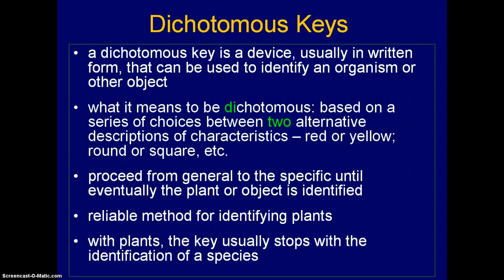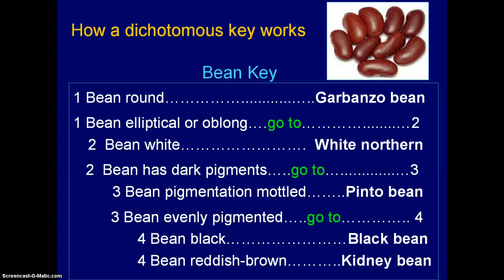Usually with plants, the key stops by the time you get to the species level, and that's usually where you're trying to get to. Now to illustrate how a dichotomous key works, we're going to look at a couple of examples.